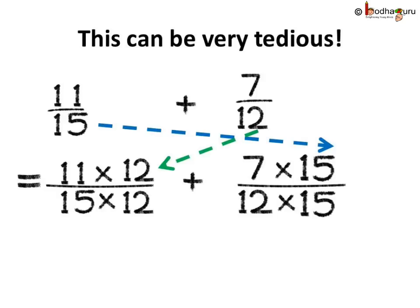Like when you add 11 by 15 and 7 by 12 — we cannot convert 12 to 15 by multiplying with any whole number. If we try to multiply 15 by 12 or 12 by 15, then large numbers are needed: 11 into 12, 15 into 12, 7 into 15, 12 into 15. That's a lot of work. Is there any easier way to do it?